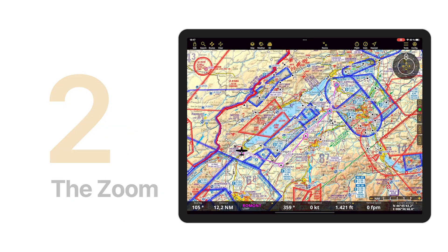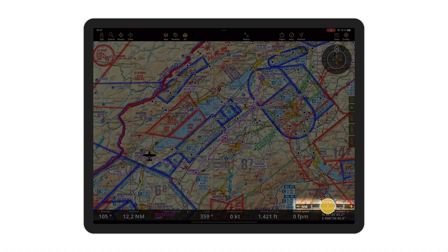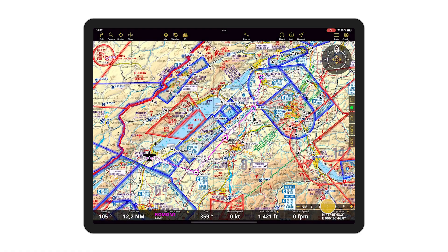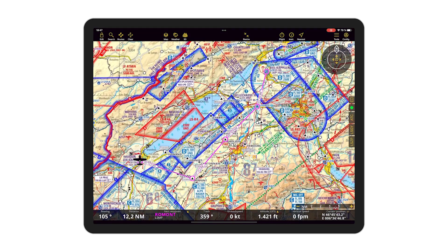Tip number two. We are used to zoom in and out with two fingers on top of the map, but it can be tedious sometimes. Let me teach you a quicker and more efficient way to do this: place just one finger on top of the scale line at the bottom right corner and move it left or right to zoom in and out.